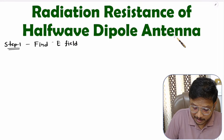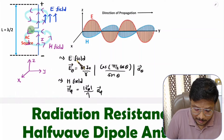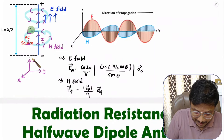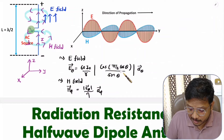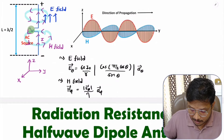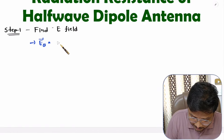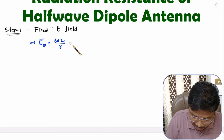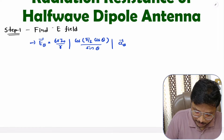For a half-wave dipole antenna — as I explained in my last video — if you place the dipole antenna on the z-axis, the electric field is E_theta = (60·I₀/r) · [cos(π/2 · cosθ) / sinθ] in the direction of a_theta.